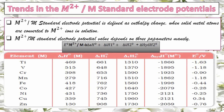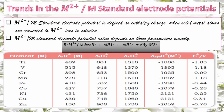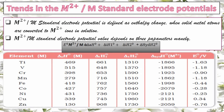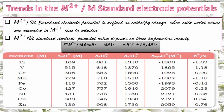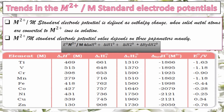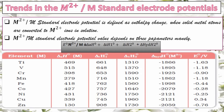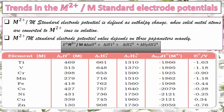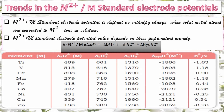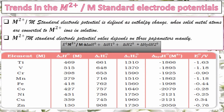The first parameter is the enthalpy of atomization, also called enthalpy of sublimation. The solid metal is converted into its atoms in the gaseous state, and some energy is required for that. This energy is the enthalpy of atomization. Since energy is required to convert solid metal into gaseous atoms, enthalpy of atomization will always have a positive value.